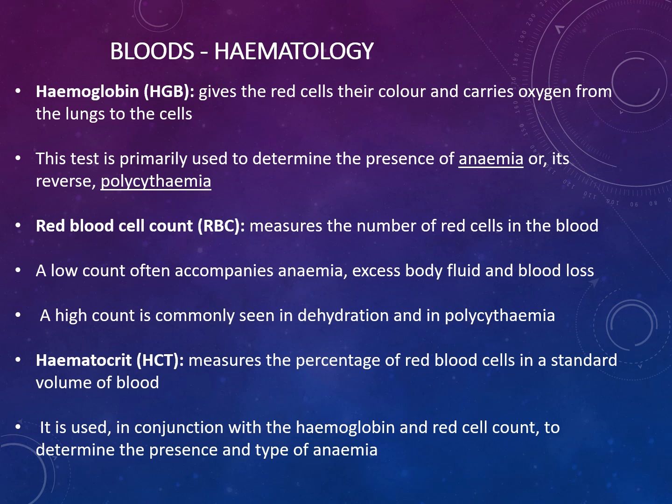You have haemoglobin, which gives the red blood cells their colour and carries oxygen from the lungs to the cells. This test is primarily used to determine the presence of anaemia or polycythaemia. The red blood cell count measures the number of red cells in the blood. A low red blood cell count often accompanies anaemia, excess body fluid and blood loss. A high count is commonly seen in dehydration and polycythaemia.